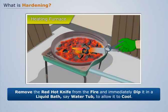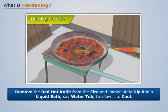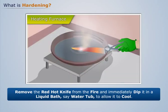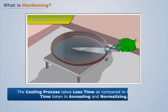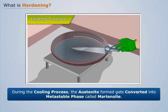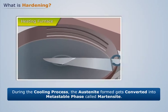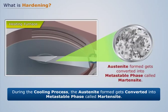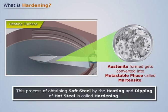Now remove the red hot knife from the fire and immediately dip it in a liquid bath — say a water tub — to allow it to cool. The cooling process takes less time compared to the cooling time taken in annealing and normalizing. During the cooling process, the austenite formed gets converted into a metastable phase called martensite.